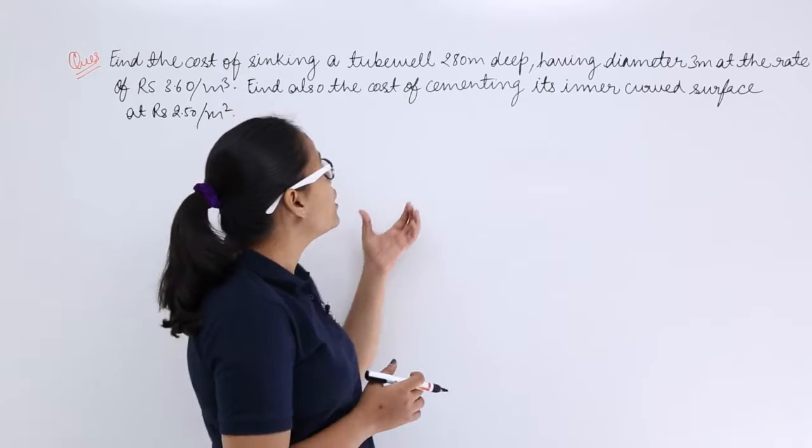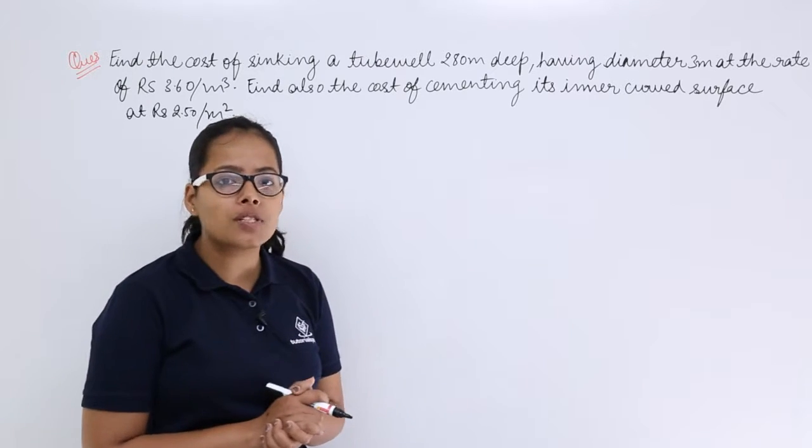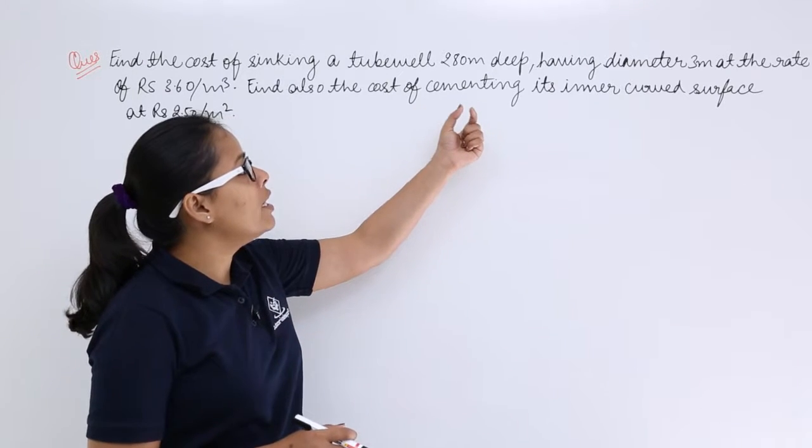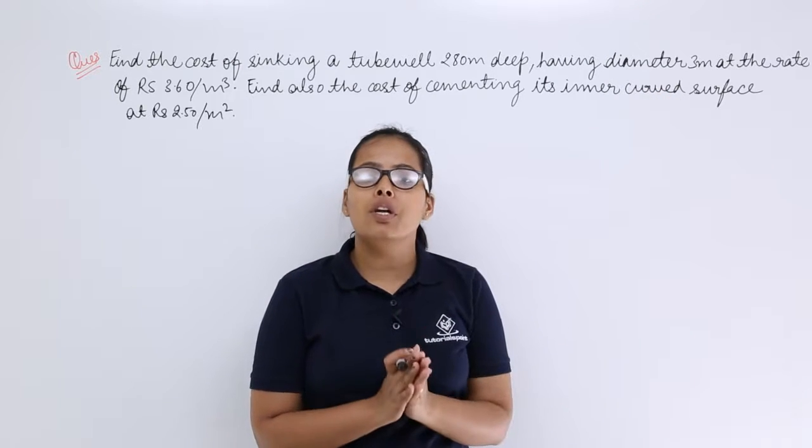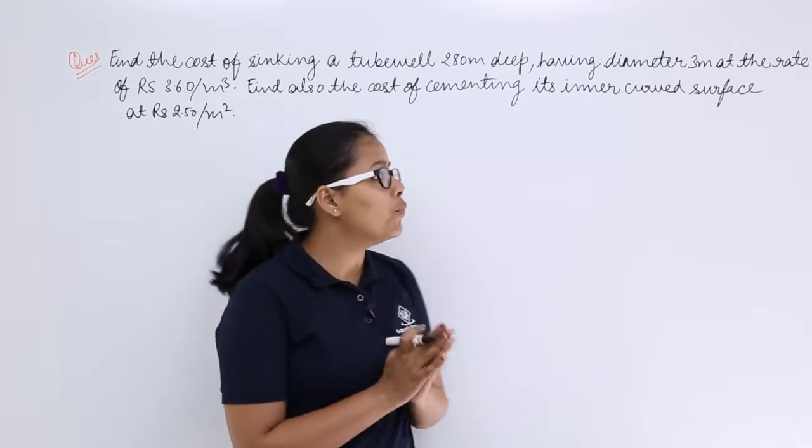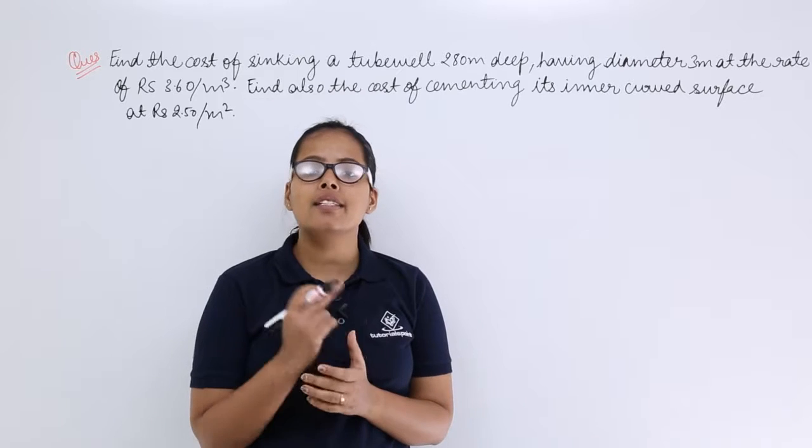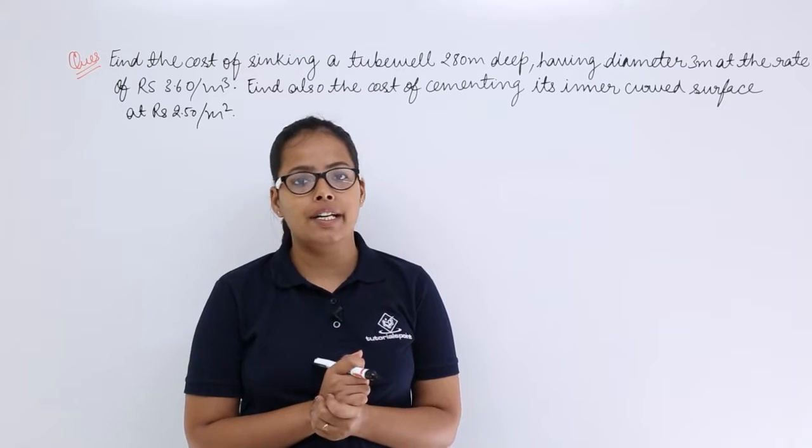So first of all, you know that this tube well is how much deep? It is 280 meters deep with a diameter of 3 meters. So what you'll do? Let's calculate the volume of this tube well as well as the area of the curved surface of this cylinder.